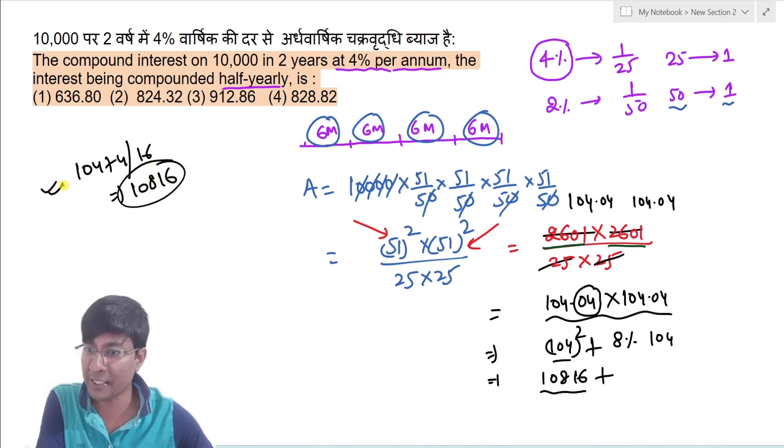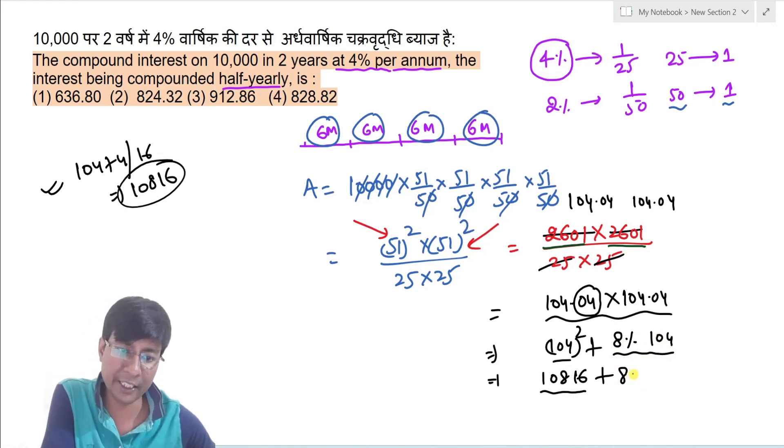Lekin ye concept kaise use kiya maine, woh maine pura detail me bataya hai. Ab aapko dusra term kya milega, 8% of 104. Toh 100 ka 8% kitna hoga, 8, aur 4 ka 8% kitna hoga, 0.32.